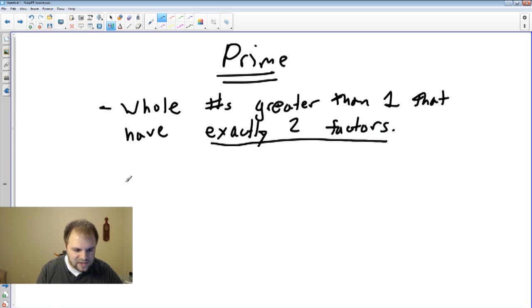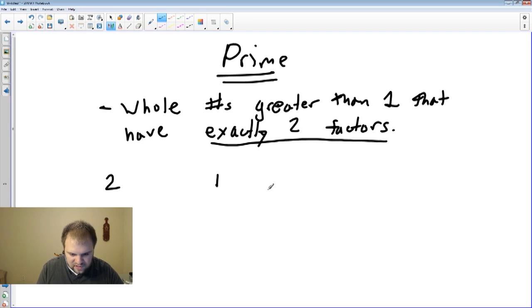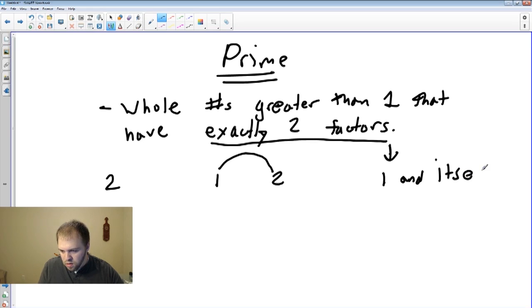So examples of these is the number 2. The only factors for number 2 are 1 and itself. In fact, that's the key thing. It's always going to be, there's exactly 2 factors, are always going to be 1 and itself.